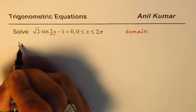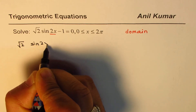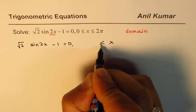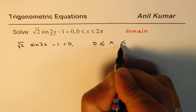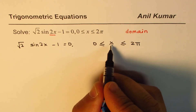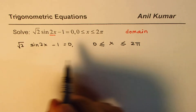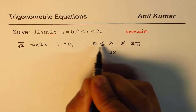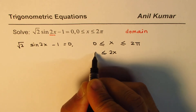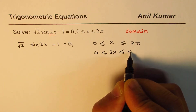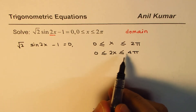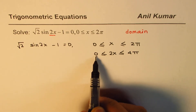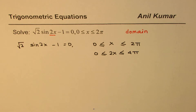The equation given to us is √2 sin(2x) − 1 = 0, and we are given that x is between 0 and 2π. That is the restriction for x, so the domain for x is 0 to 2π. But in our equation we have 2x, so what is the domain for 2x? If I multiply all terms by 2, I get 0 to 4π. So the solution for this equation should be for 2x between 0 to 4π.